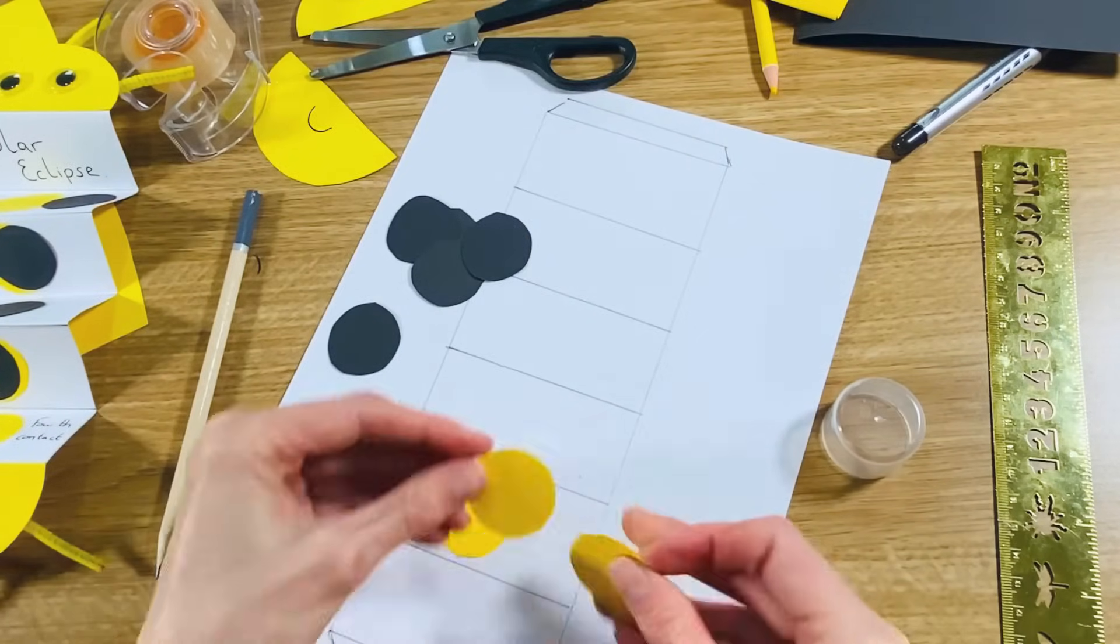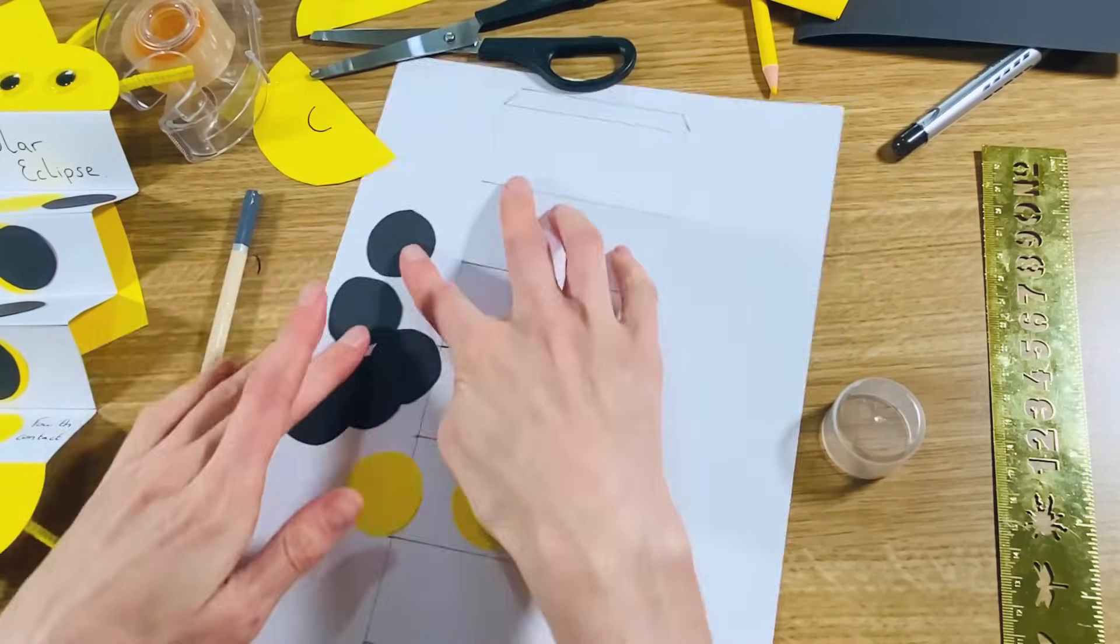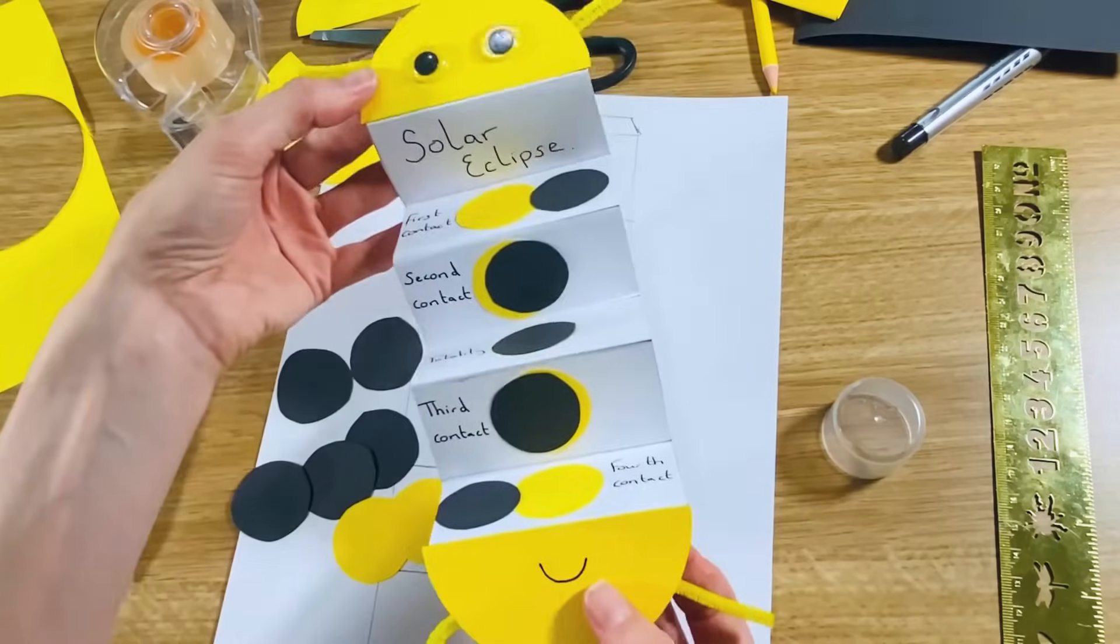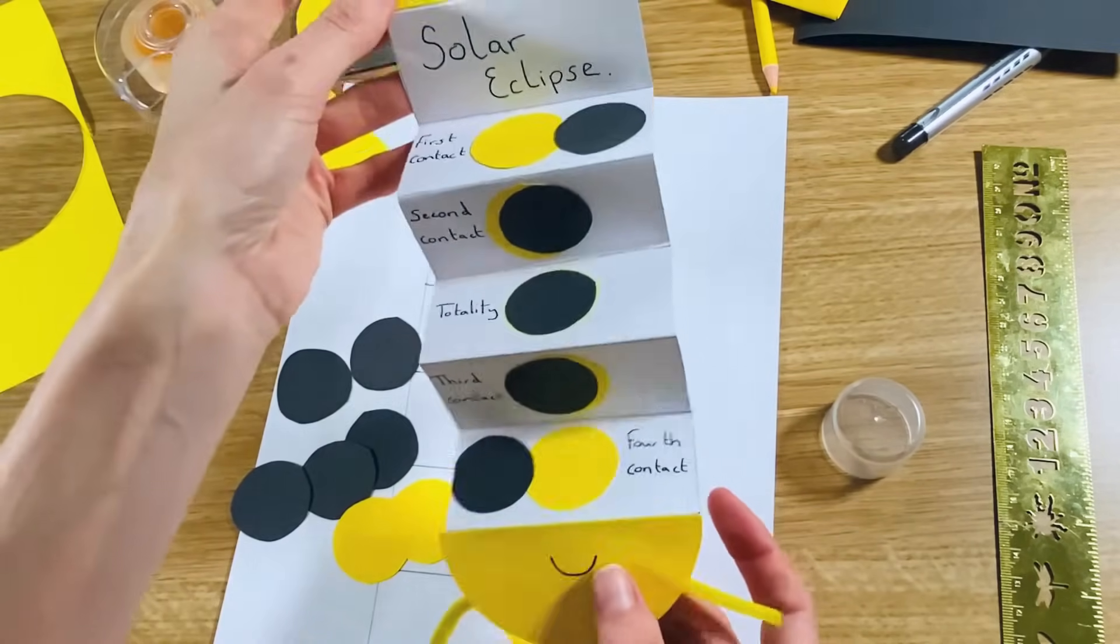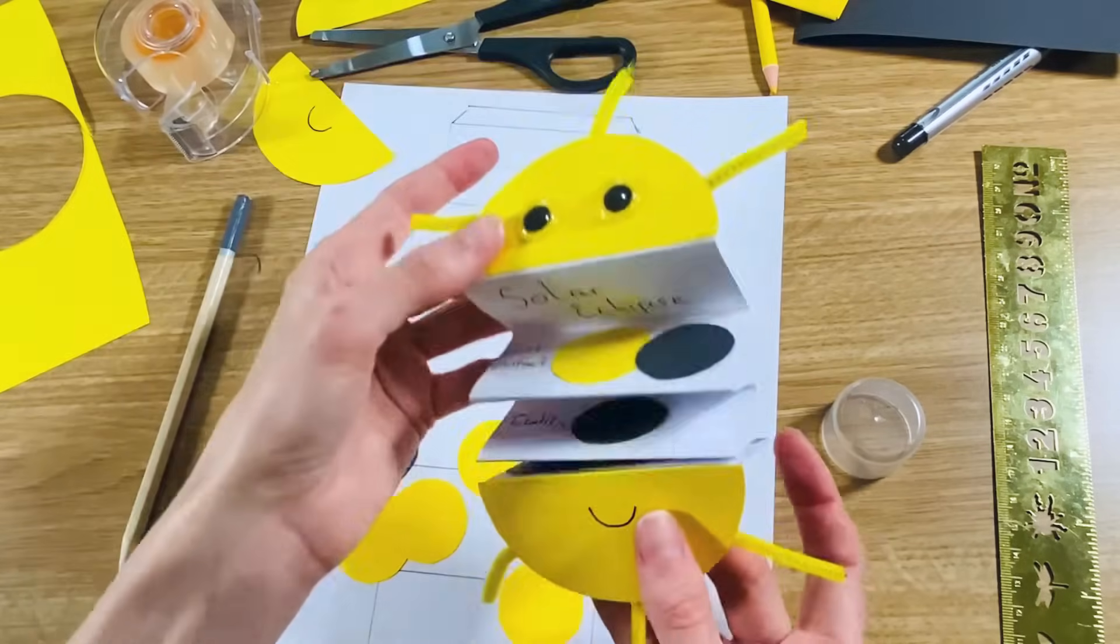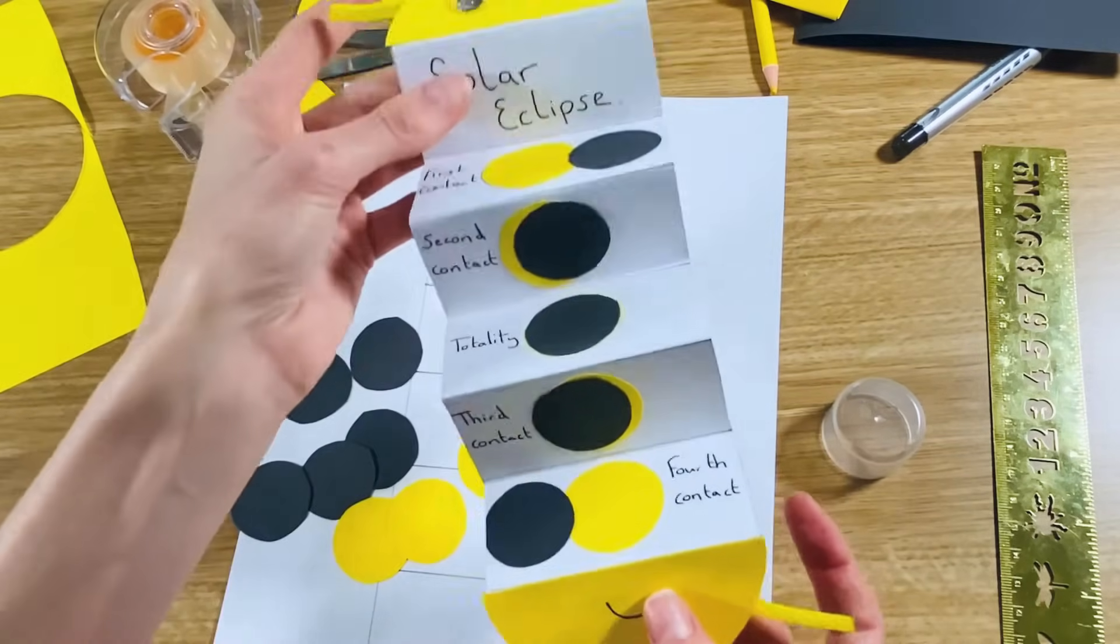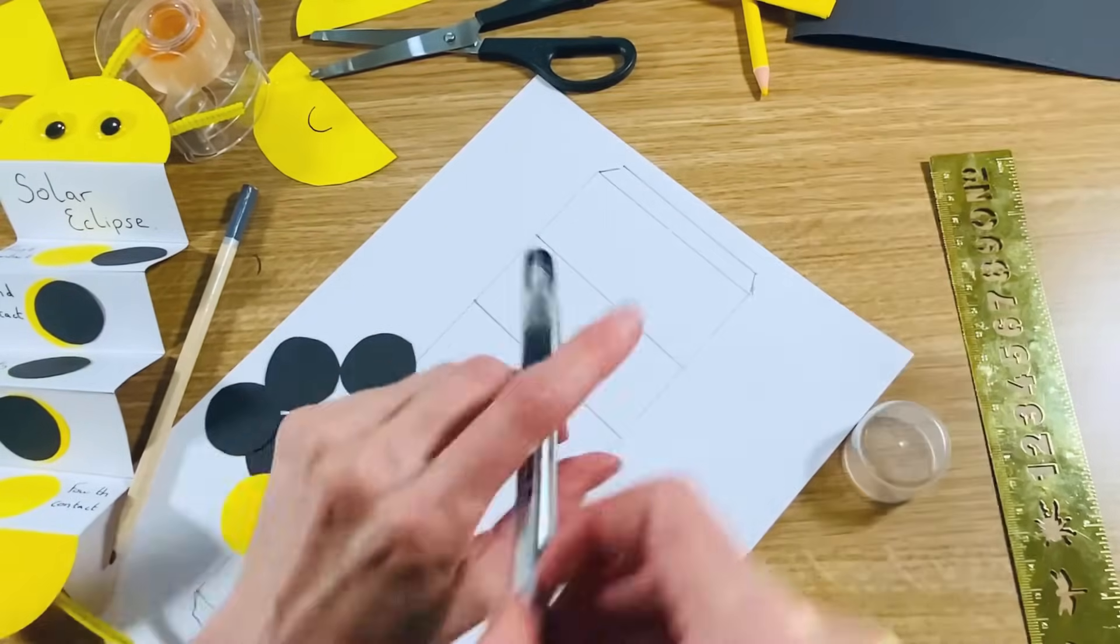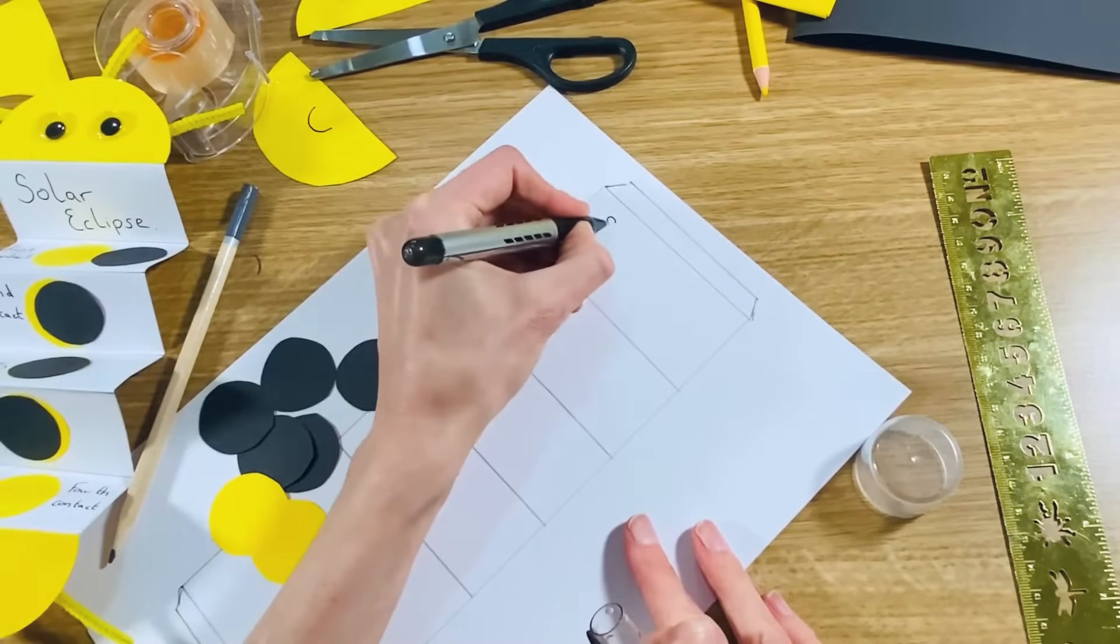One, two, three, four, and five. So you will have noticed from my finished example that there are five stages in the solar eclipse, but I've got six boxes. And that's so that it folds properly—it needs an even number of boxes in the middle. So I'm just going to use that top box to write 'Solar Eclipse.'